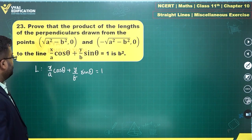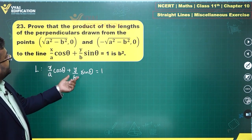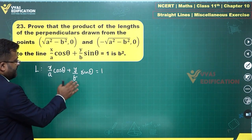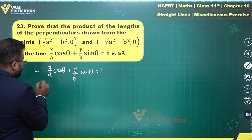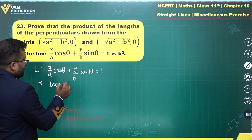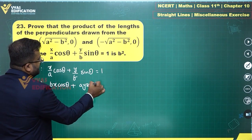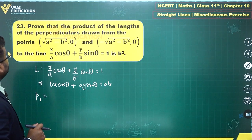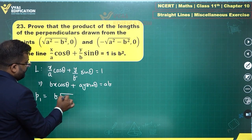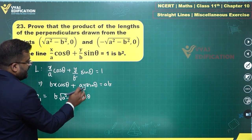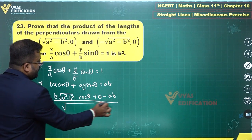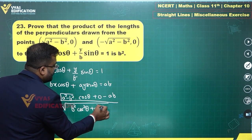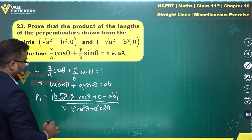We want to simplify this line. Taking the LCM gives b·x·cosθ + a·y·sinθ = ab. Now for the first point (√(a²−b²), 0), the perpendicular length P1 equals the modulus of b·√(a²−b²)·cosθ + 0 − ab, divided by √(b²cos²θ + a²sin²θ).